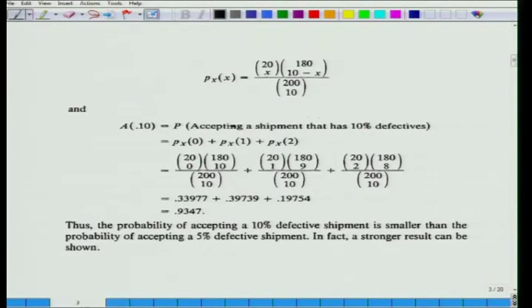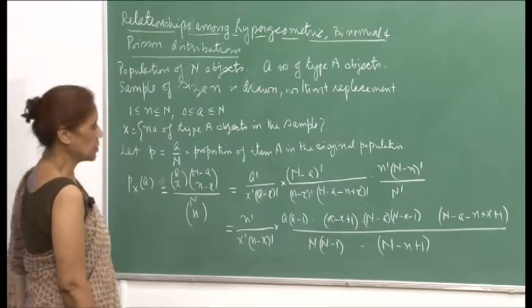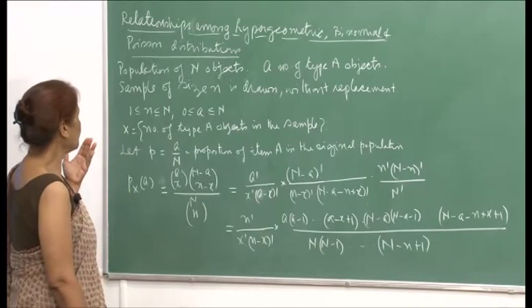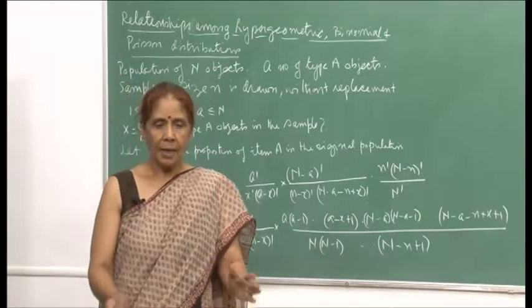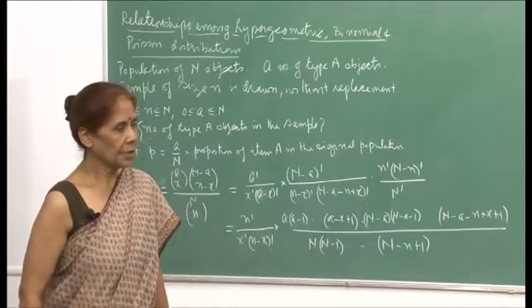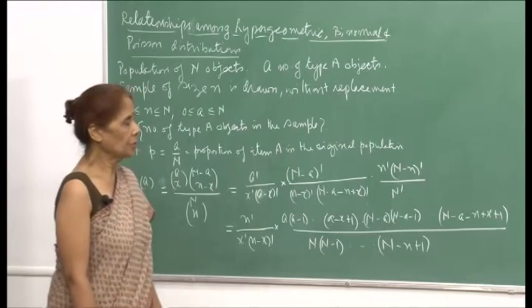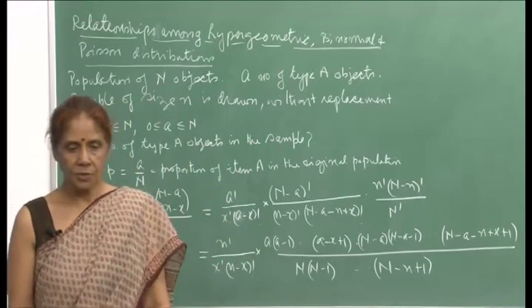You can experiment with other values of the number of defective items in the whole lot and compute the probabilities accordingly. Now, regarding relationships among hypergeometric, binomial, and Poisson distributions: I have already shown you how binomial will approximate to Poisson when n is large and n times p converges to a moderately small number. Here, let me show you the interconnection between all these discrete random variables we have discussed so far.